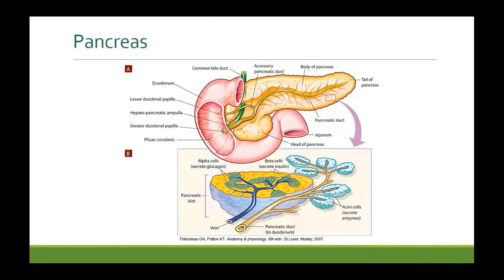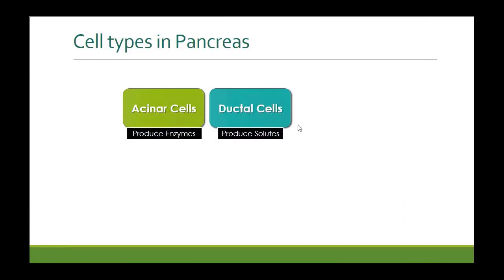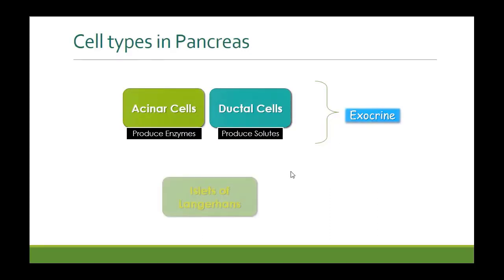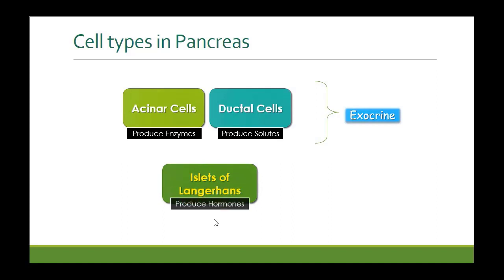Remember the pancreas has two different components embedded together. The exocrine pancreas consists of cells that produce enzymes and bicarbonate, which are secreted via the duct into the duodenum. In between, you have the islets of Langerhans, which contain cells that produce hormones secreted directly into blood vessels. So the exocrine pancreas includes acinar cells and ductal cells producing enzymes and bicarbonate, while the endocrine pancreas — the islets of Langerhans — produces hormones.